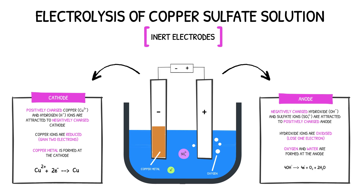The half equation for the reaction at the anode would look like this. As well as the observations noted above, the blue colour of the copper sulphate solution will begin to fade as the process progresses. This change occurs as a result of the copper ions being removed from the solution.